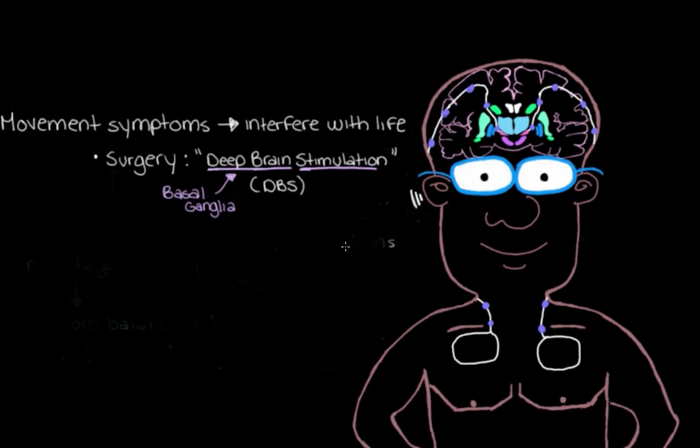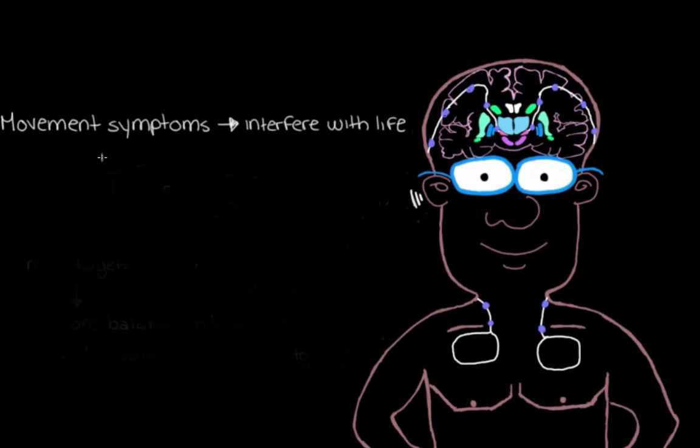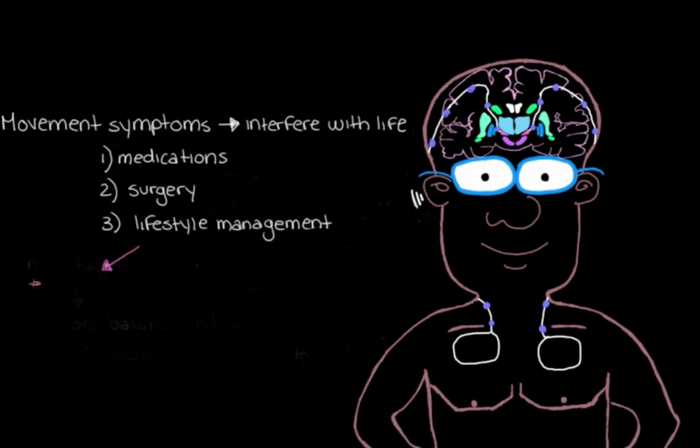Now we know that we have medications and if needed later on, surgery that can help manage some of the symptoms of Parkinson's disease. But we have another category - lifestyle management options. For example, exercise and physiotherapy, while they won't stop or slow down the movement signs, can help alleviate some of the associated muscle and joint pain that can result from rigidity and postural changes that can happen over time with Parkinson's disease.